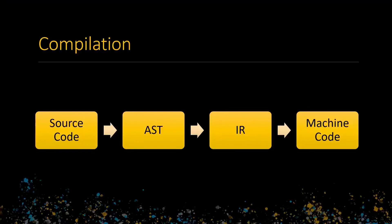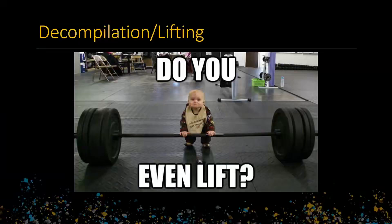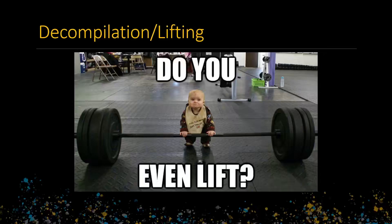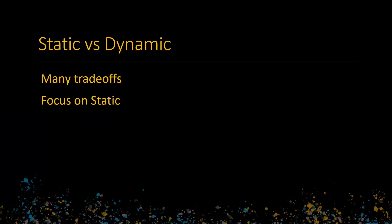What actually is binary analysis? Remember how compilers work: we start with some source code, run it through a parser to produce an abstract syntax tree, which is then converted into some kind of intermediate representation. We do our passes on this intermediate representation to produce an optimized form of the code, and then it's emitted to machine code for whatever the target is. Decompilation is the opposite — it's the process of lifting the native architecture to a representation that's easier to reason over.